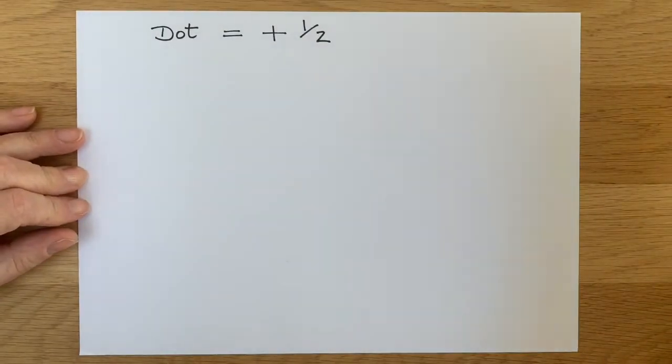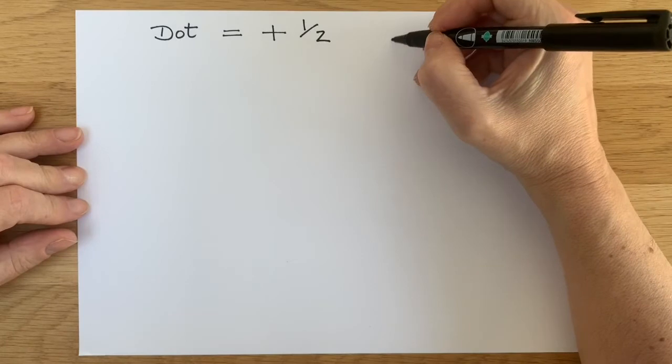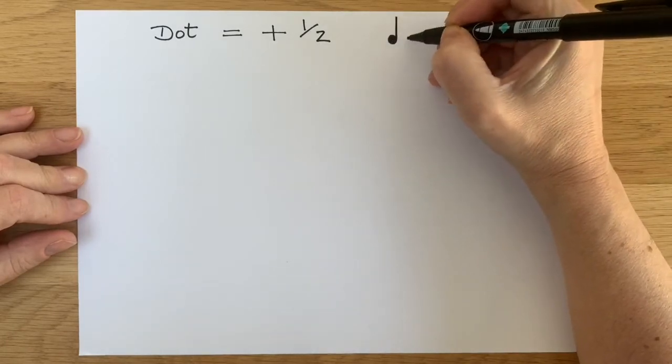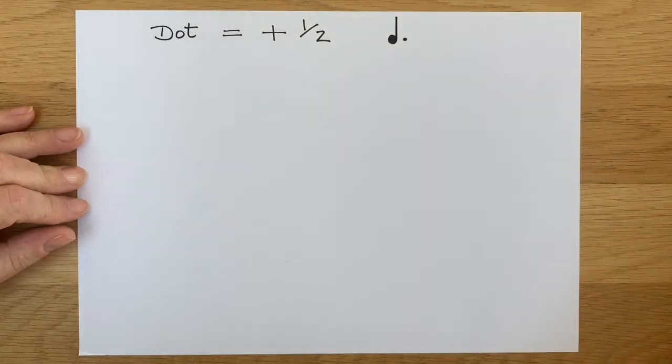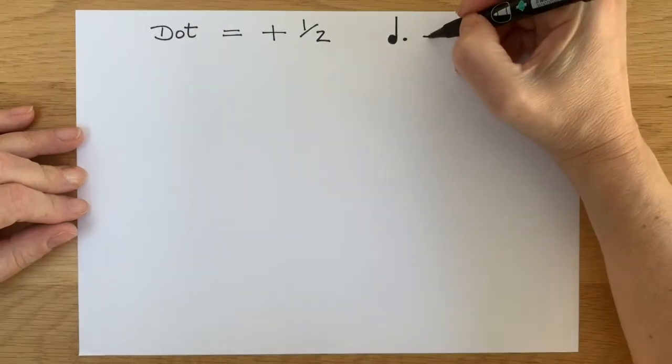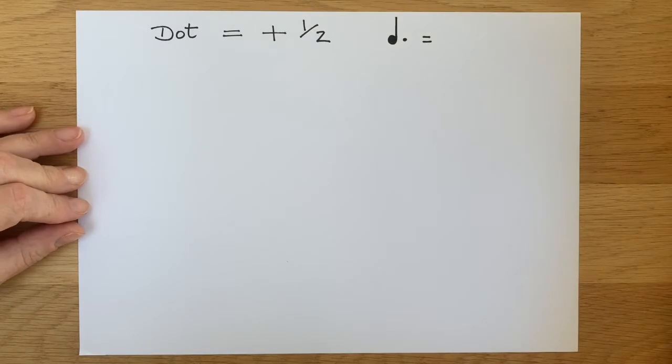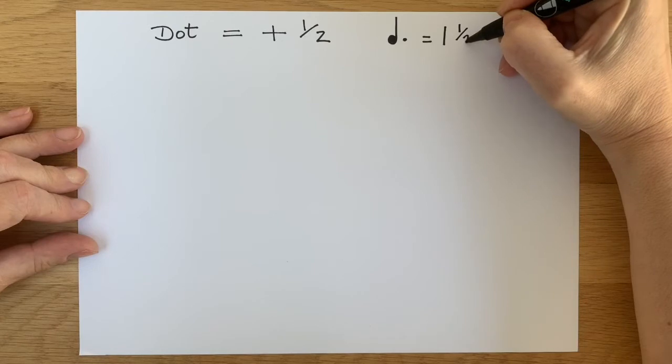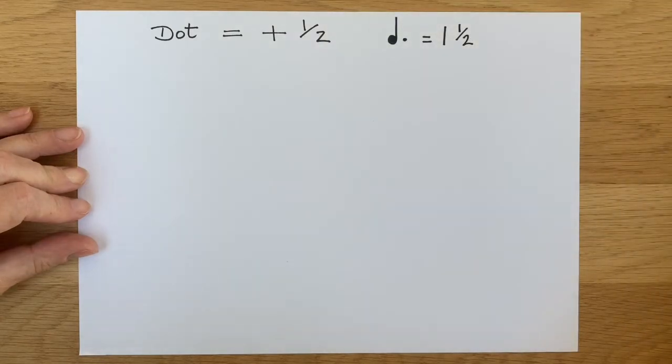So let's look at some examples. If there was a crotchet that had a dot straight after it, the crotchet would be worth one beat and so the dot would be worth a half. So the whole thing is one and a half.